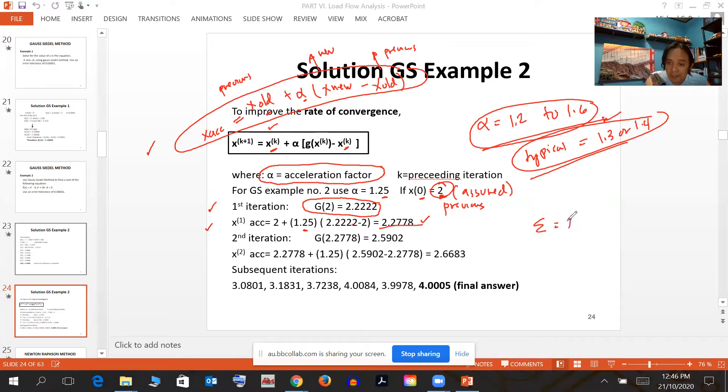Substitute 2.2778 into g(x) to get 2.59. Use the rate of convergence formula: x acceleration is 2.2778 plus 1.25 times (2.59 minus 2.2778), which gives 2.66. After 7 iterations, the answer is 4. It decreased slightly compared to 8 iterations without acceleration, so there's improvement.